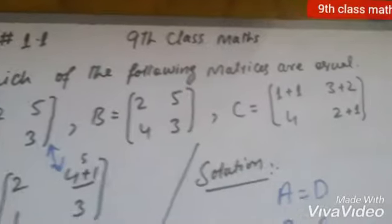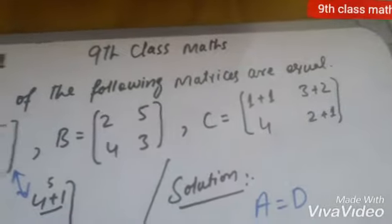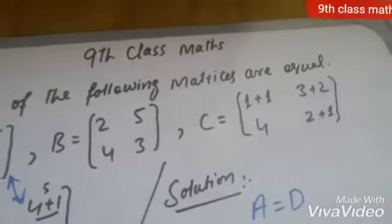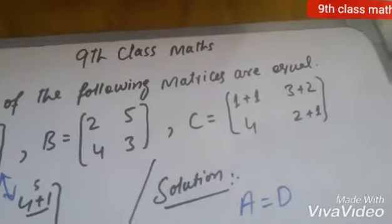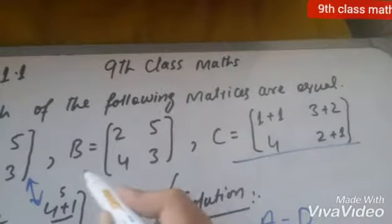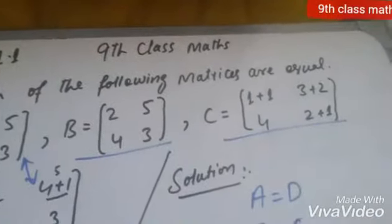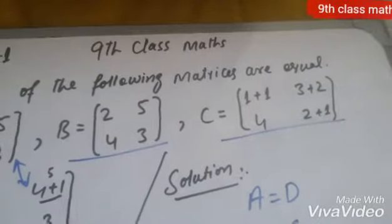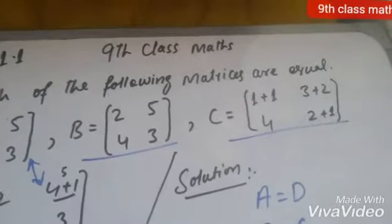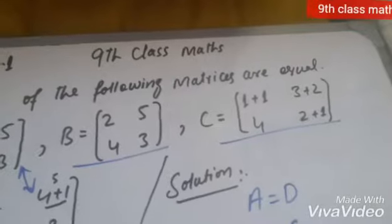Matrix B element is 2, 5, 4, 3. Matrix C: 1 plus 1 is 2, 3 plus 2 is 5, 4, and 2 plus 1 is 3. So B and C are equal.